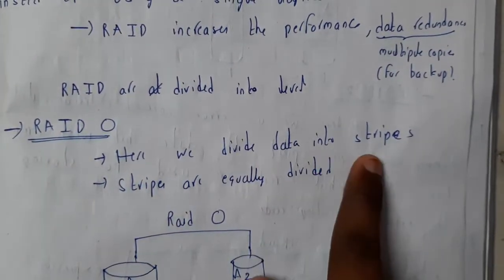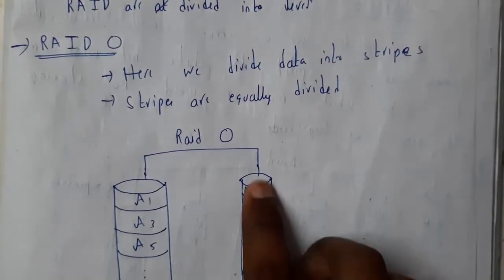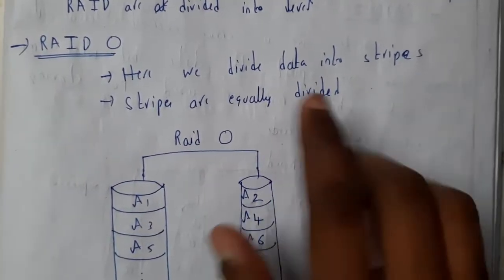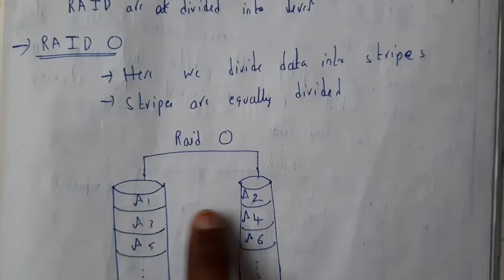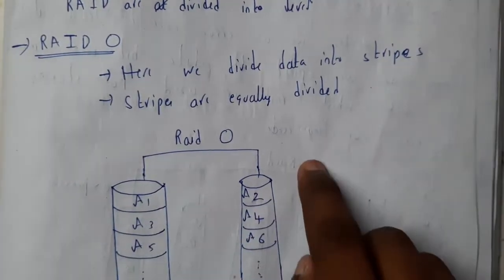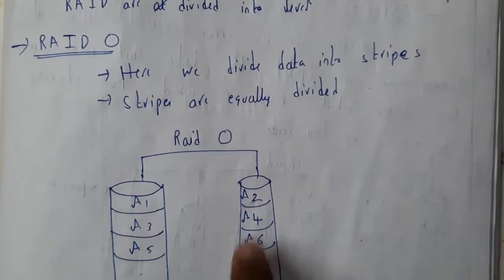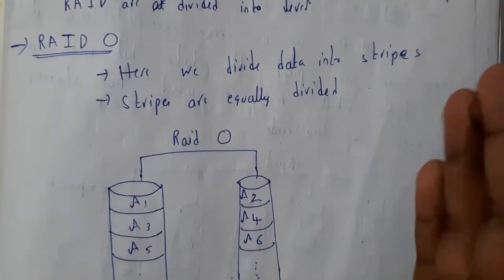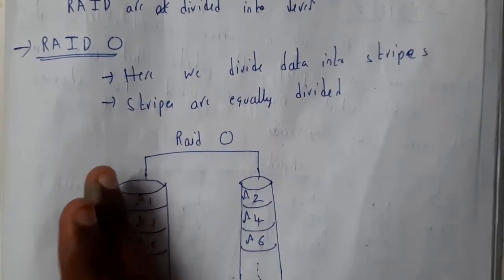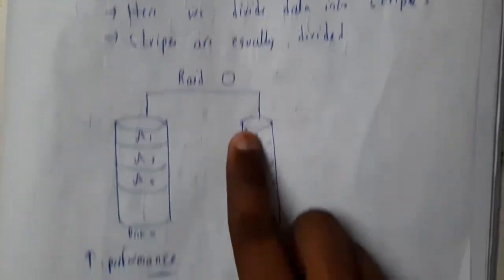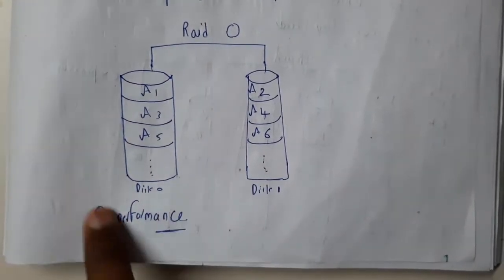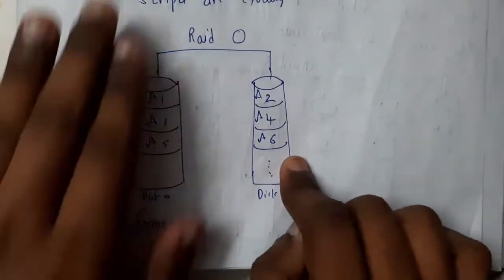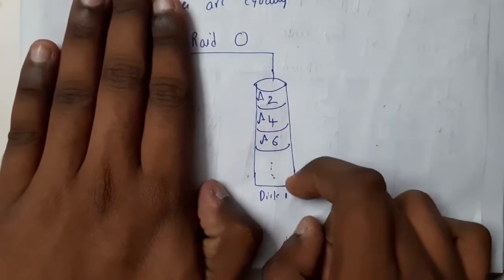In RAID 0, we divide the data into strips. Let us assume we have a file divided into 6 parts: a1, a2, a3, a4, a5, a6. The odd-numbered parts are stored in one disk and the even-numbered parts are stored in another disk. This increases the performance.